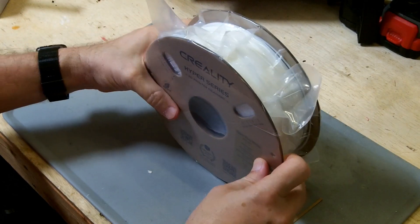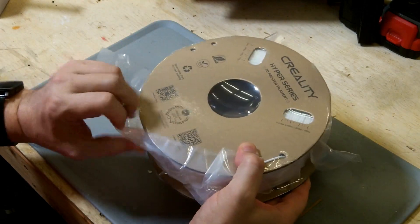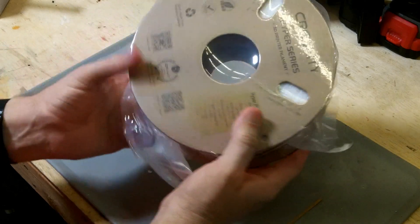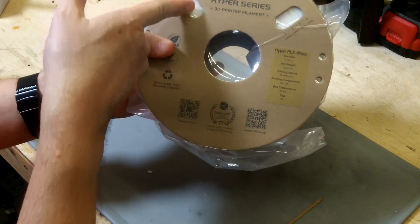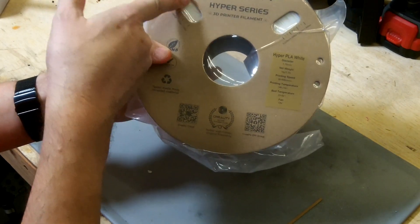Inside we have a cardboard spool made out of recycled paper products. It has a nice little gauge here that gives you an estimate of how many grams of filament are remaining based on how much you've used.